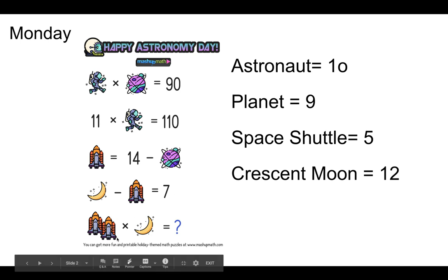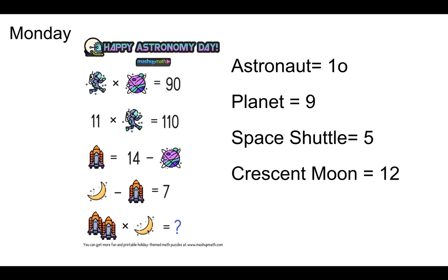I have two spaceships here. 5 and 5 together make 10. 10 times 12 is 120.